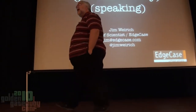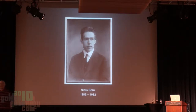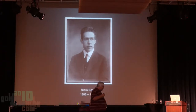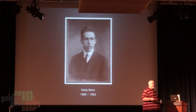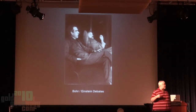Before we get into that, I want to talk about this guy right here. He was a physicist and did a lot of work in the early days, in the early 1900s, on the development of the atom and our understanding of how the atom is put together. He is a contemporary of Einstein. In fact, he and Einstein had a series of debates on quantum mechanics. The summary of that is that Niels Bohr was correct and Einstein was wrong.